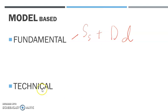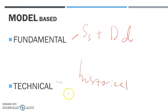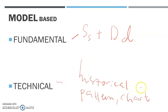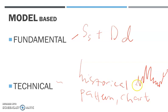The second one is technical analysis. When we talk about technical analysis, we refer to historical data and then put it into a pattern through charts. We can see the performance of ringgit Malaysia going up and down — whether it fluctuates or shows a volatile trend.